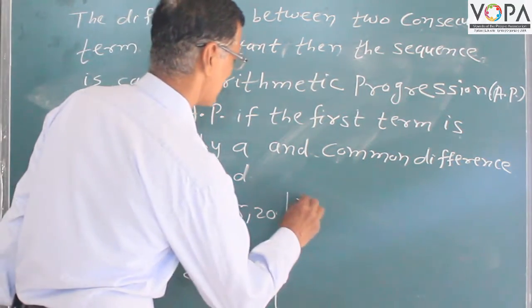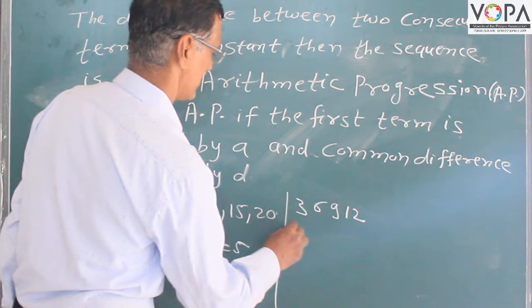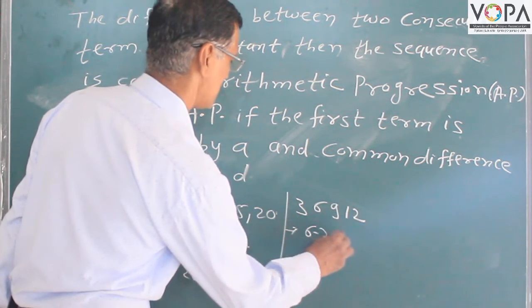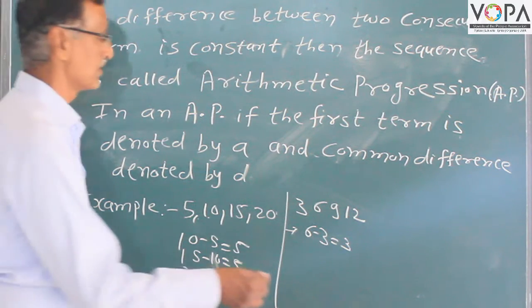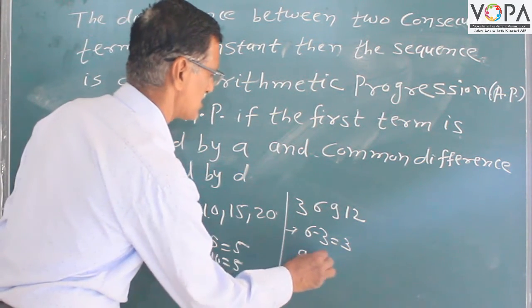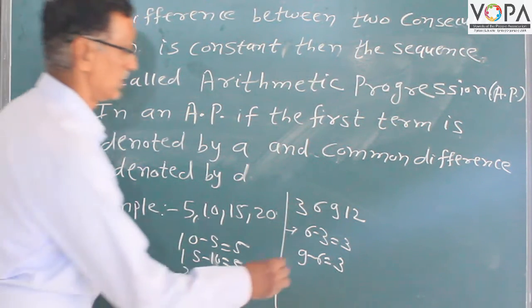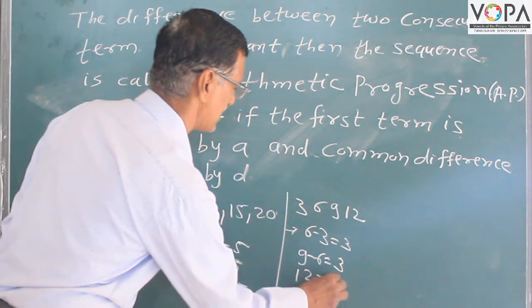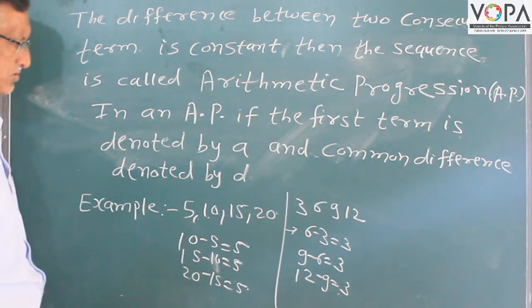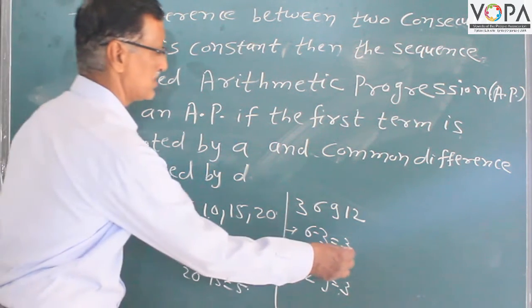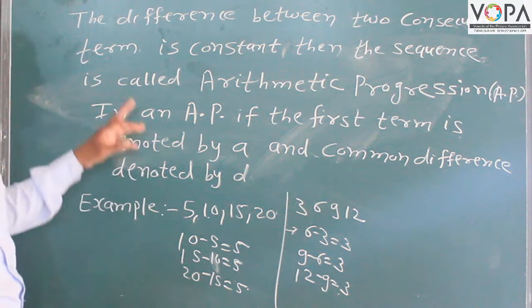Another example is 3, 6, 9, 12. That is: 6 minus 3 is equal to 3, 9 minus 6 is equal to 3, 12 minus 9 is equal to 3. The difference between two consecutive terms is constant — this difference is 3 — so it is an AP.